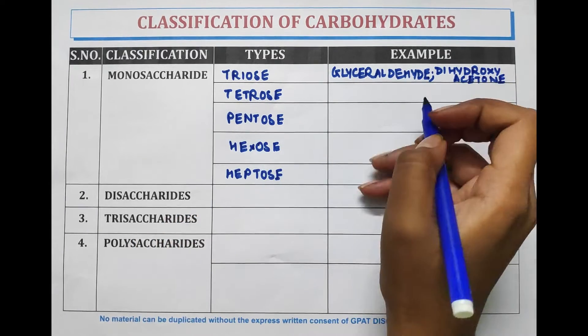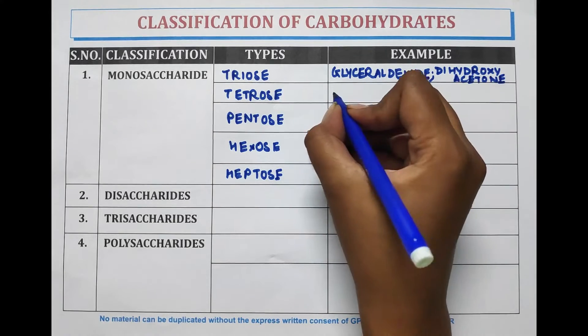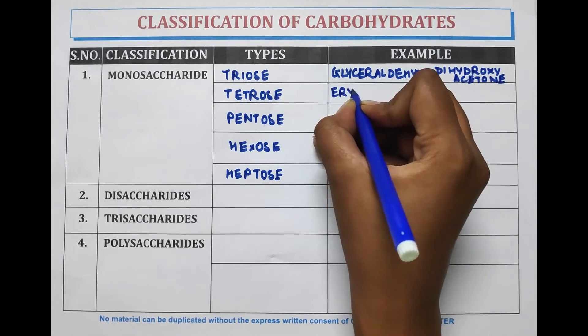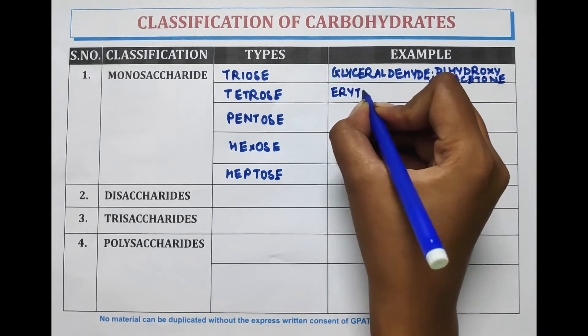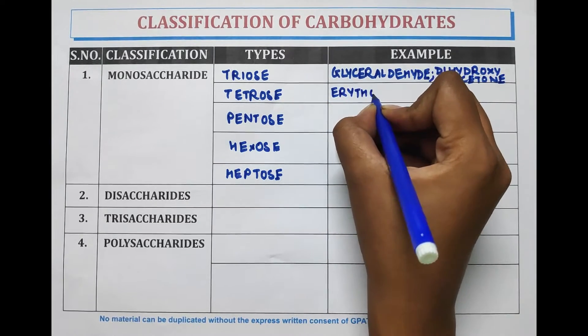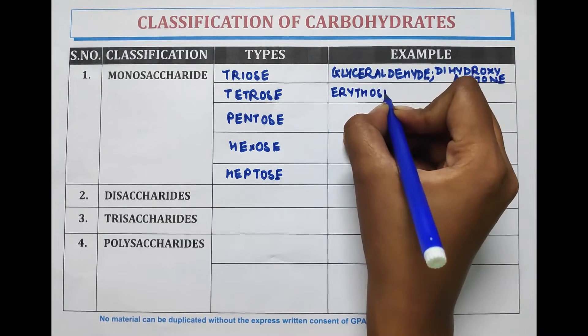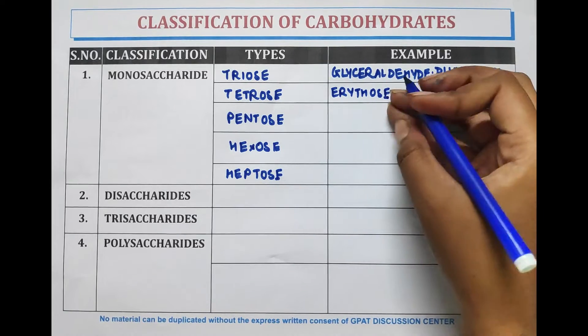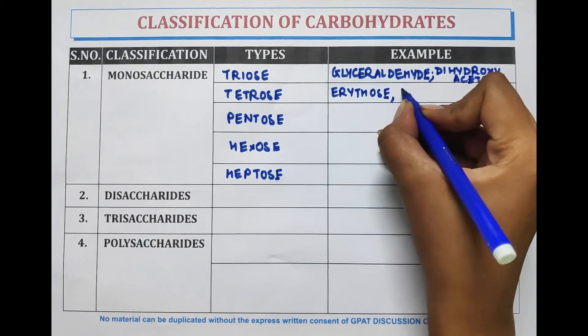The example of tetrose is erythrose and erythrulose.